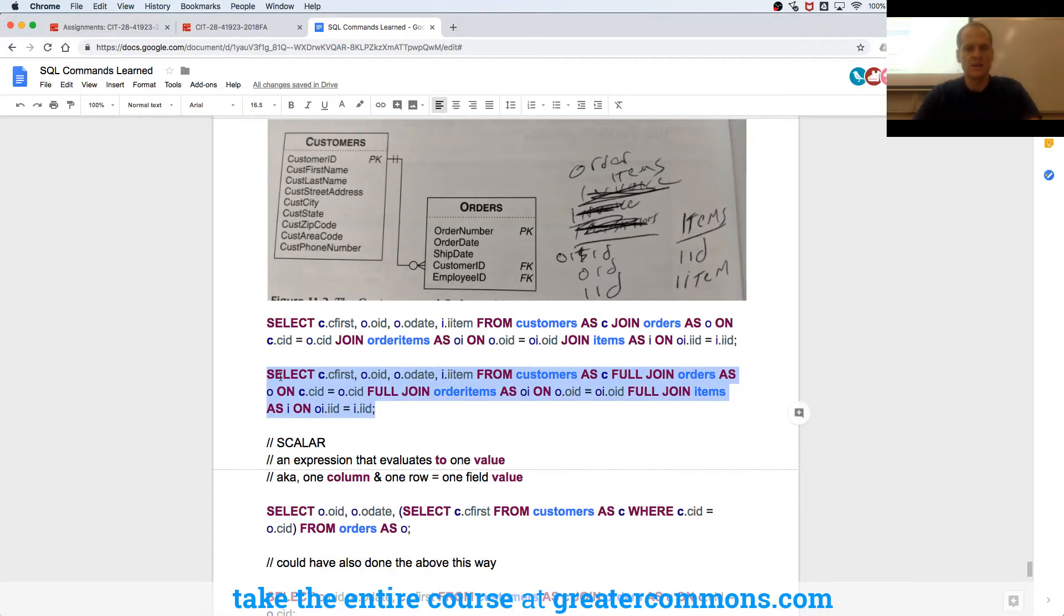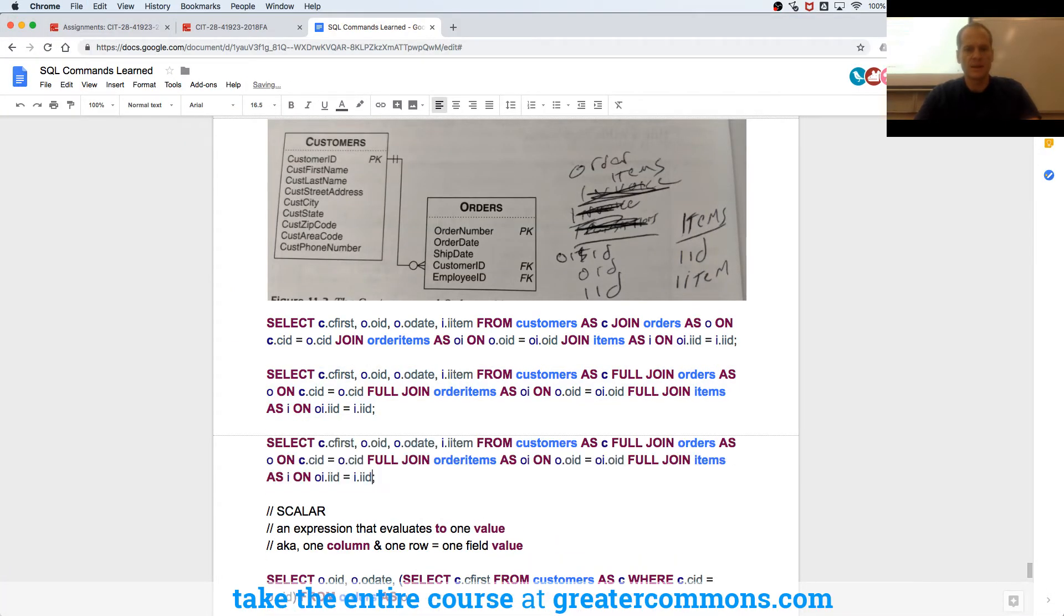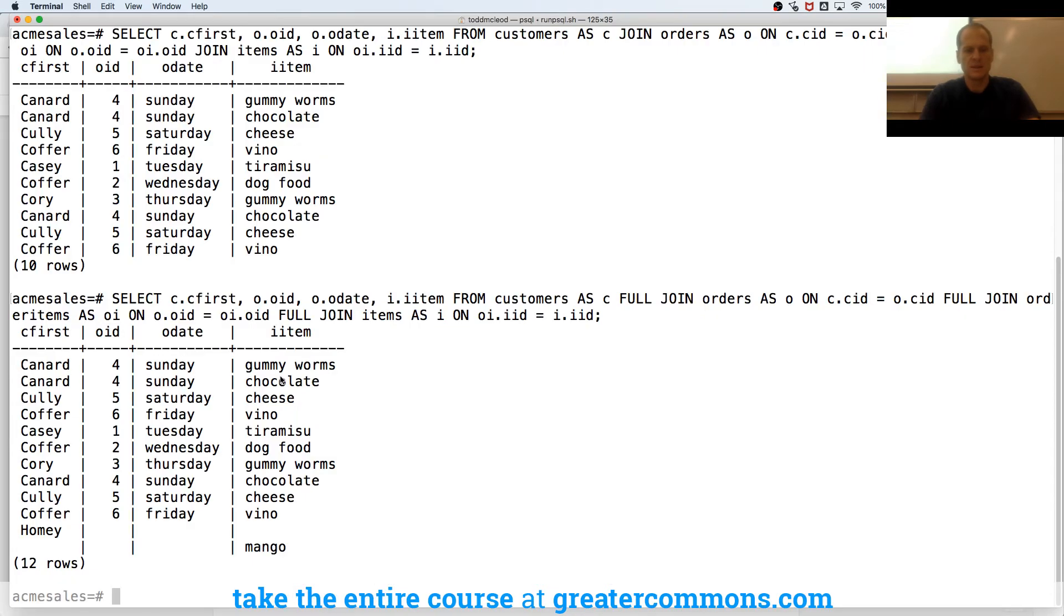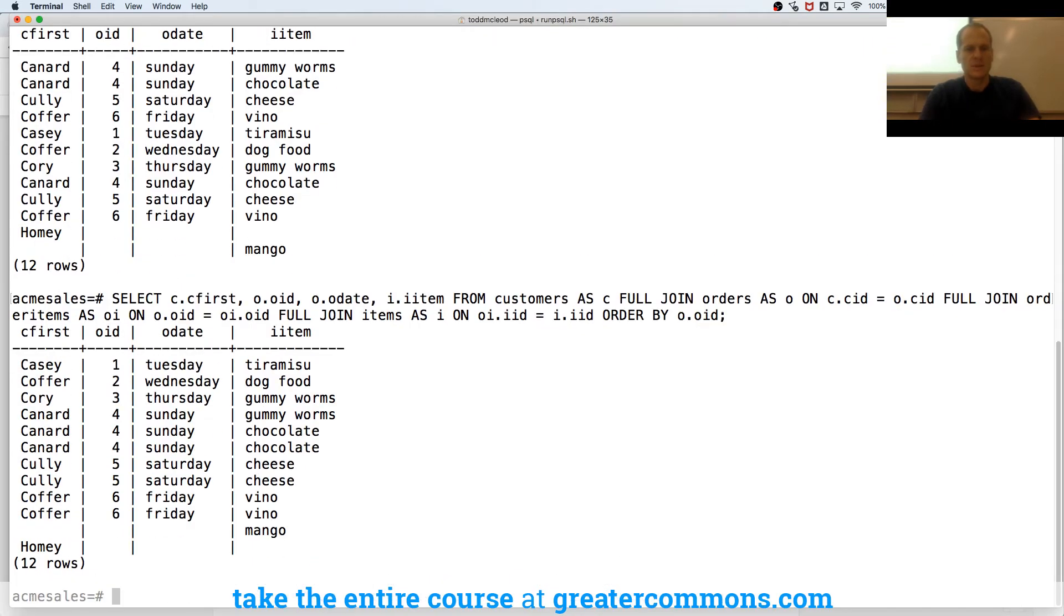But I could also do Order By, and what I want to order by, O.OID. So we could see, you know, Order 4 had those three things. It's kind of cool.